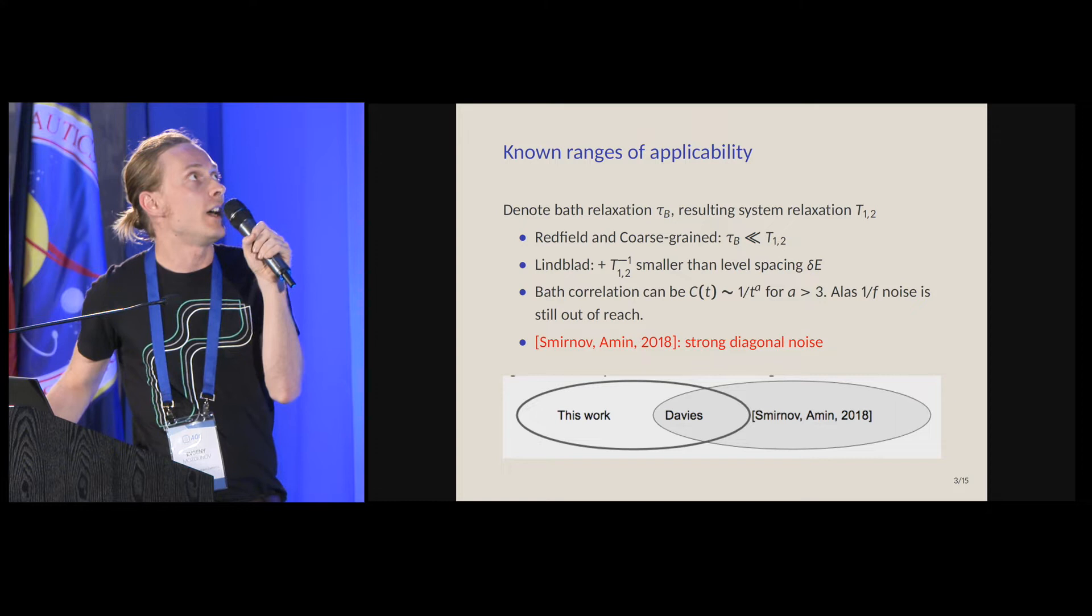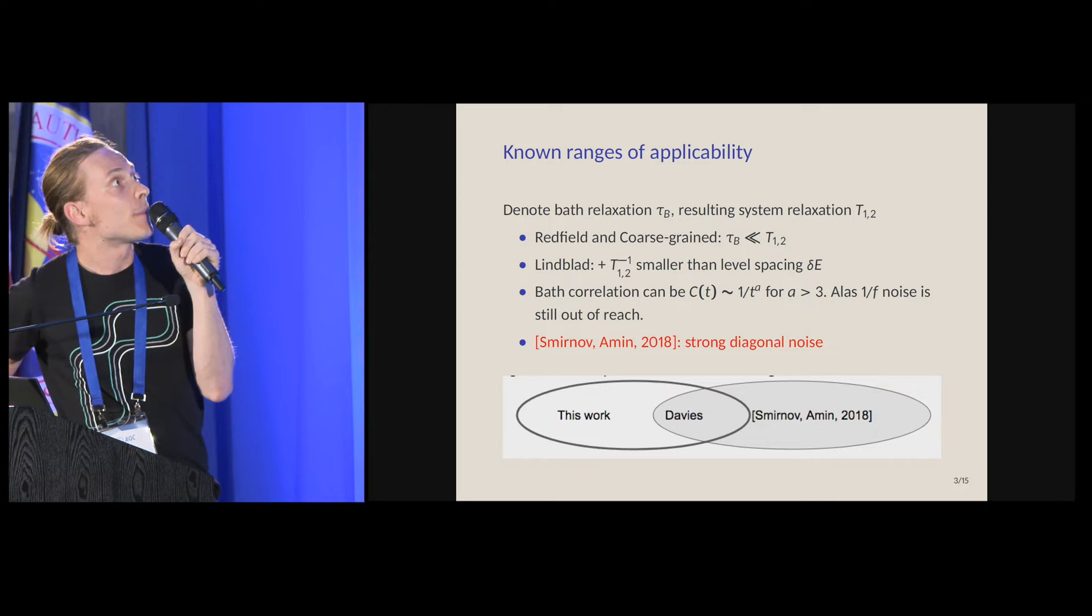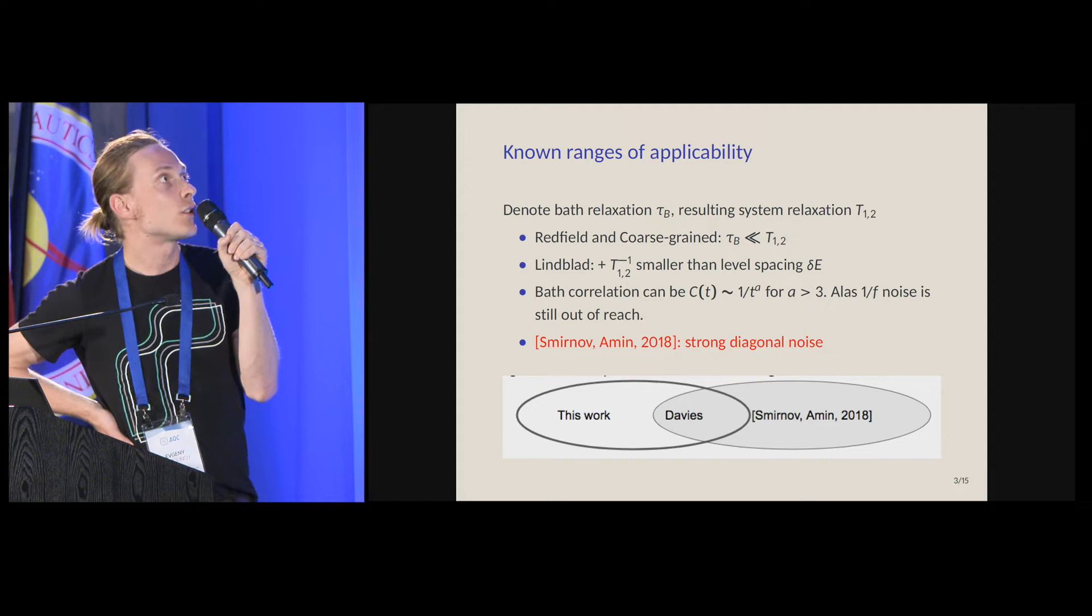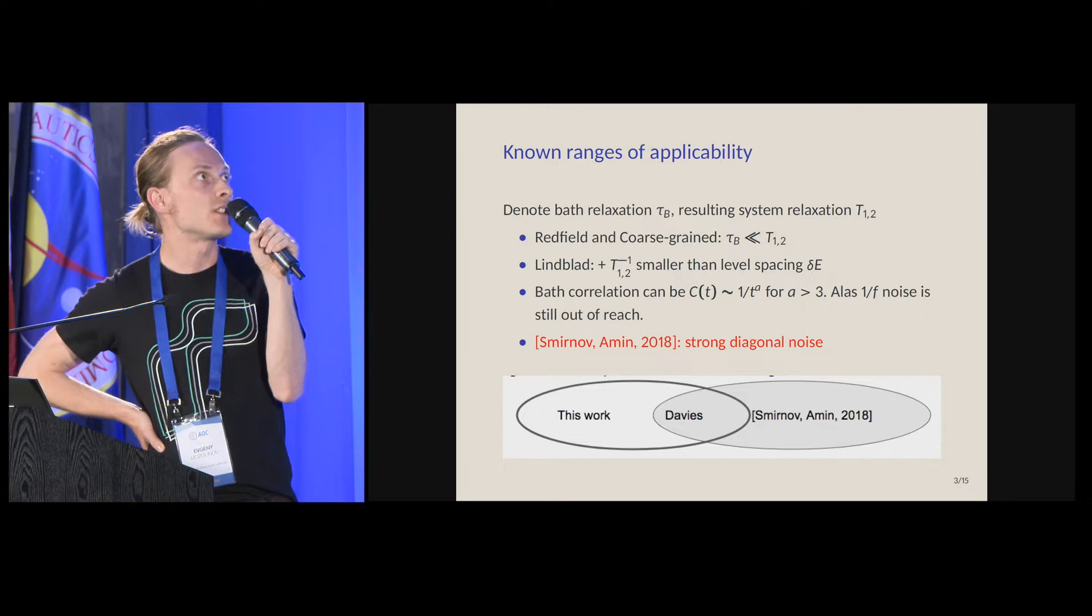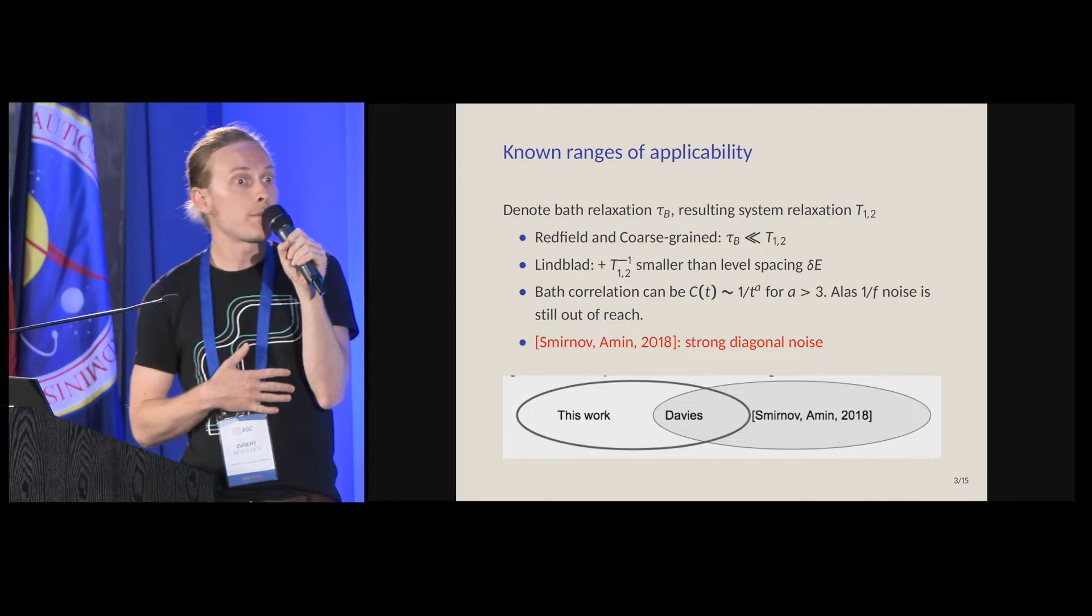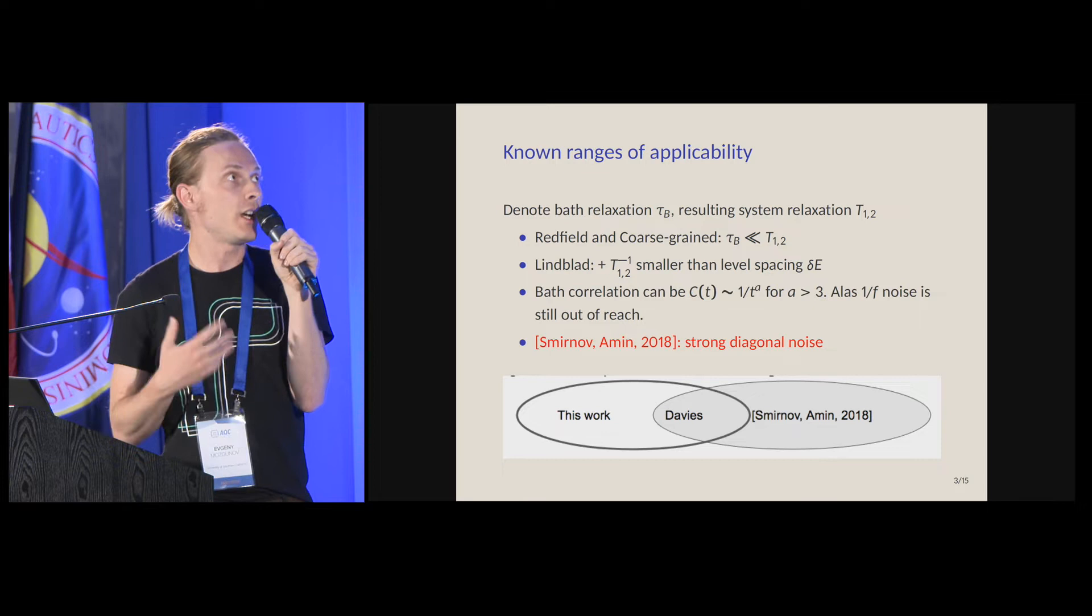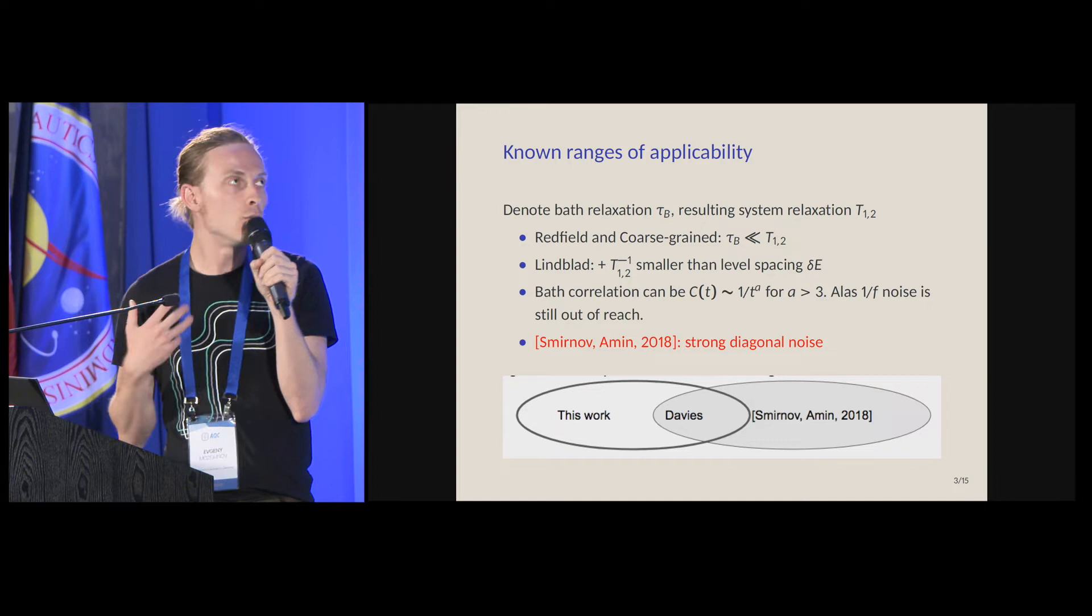The bath relaxation time here is defined in a liberal way. I can allow for power law decaying correlation of the bath in time, but for powers that are relatively big. 1 over f noise is definitely out of question for my approach. As I said, it is a fast bath approach. For slow noise, even though we have the equation, the range of applicability is not really clearly spelled out. In words, they require strong diagonal noise, but quantitatively it is not really clear what that means.